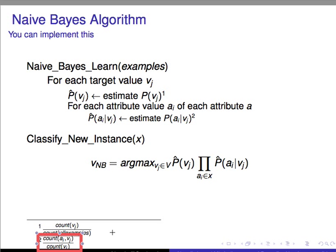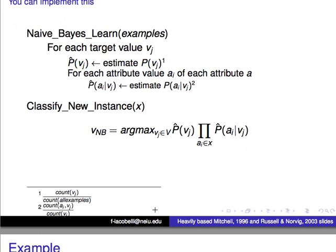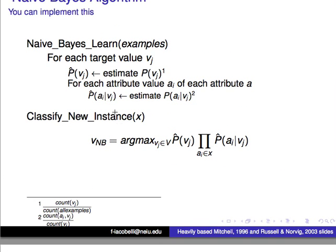For example, if one of my attributes is 'has a fever,' and I want to know the probability of having a fever given that the person has the flu, I count all the cases where fever equals yes and flu equals yes, divided by all the cases where flu equals yes. That's how I estimate each one of these probabilities — and I do that for each attribute, for each value of the target attribute.